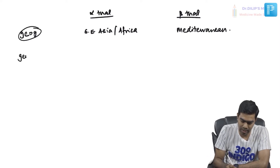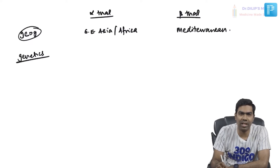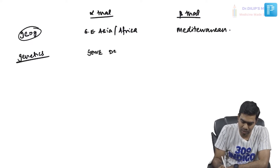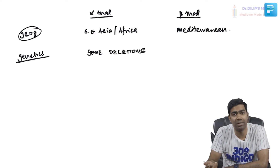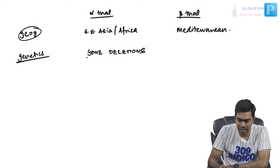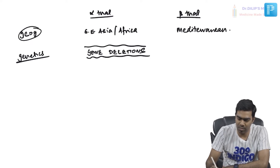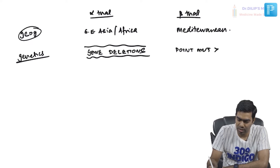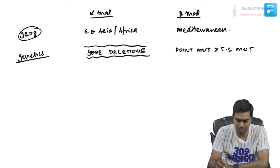Then there is genetics. Alpha thalassemia is generally due to gene deletions — that is the classical and most common cause. But if you ask about beta thalassemia, they are generally due to point mutations or frameshift mutations. That is the reason why you get beta thalassemia commonly.